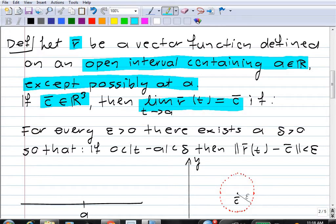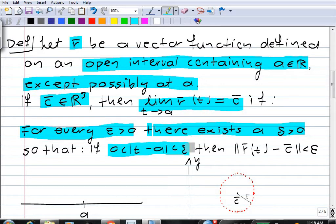And it's formally exactly the same. For every ε > 0, there exists a δ > 0, so that if |t - a| is between 0 and δ, then ||r(t) - c|| < ε. So you see, this is exactly like the definition for a limit of a scalar function, except that here we have the norm, because we're dealing with vectors instead of numbers, so we can't use absolute value.